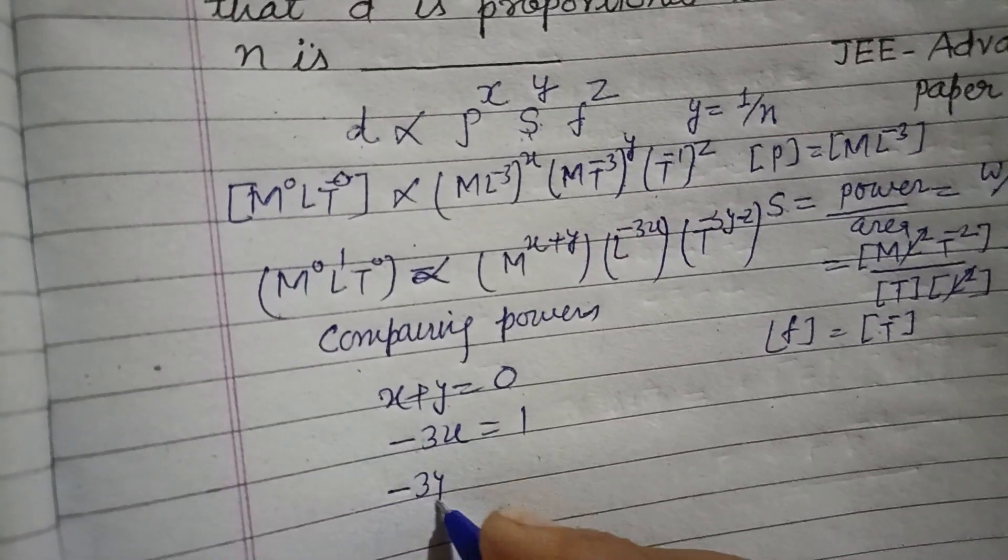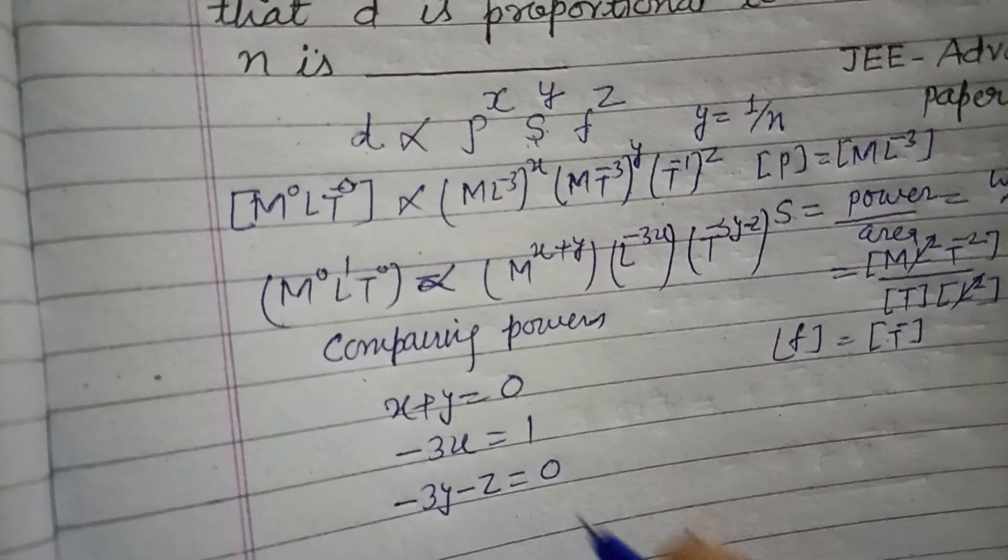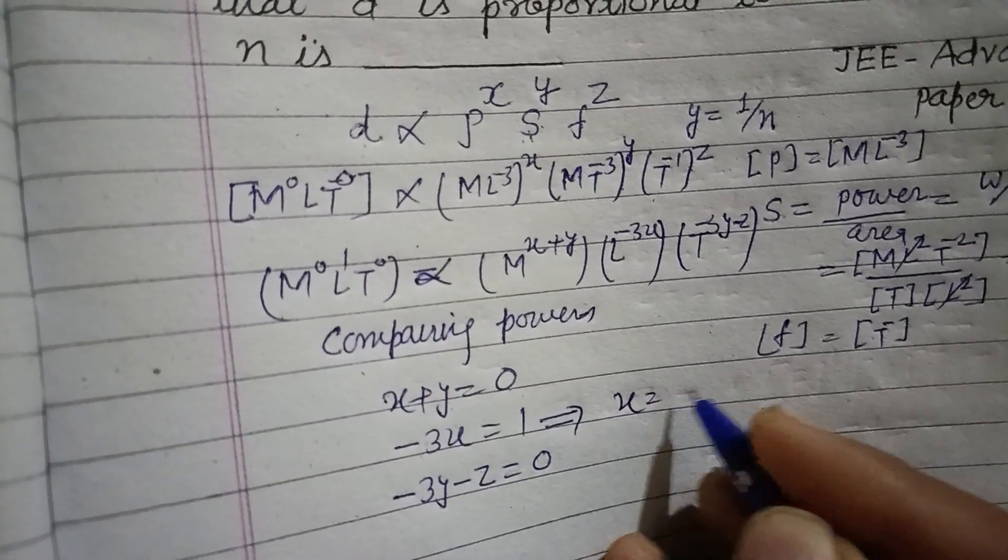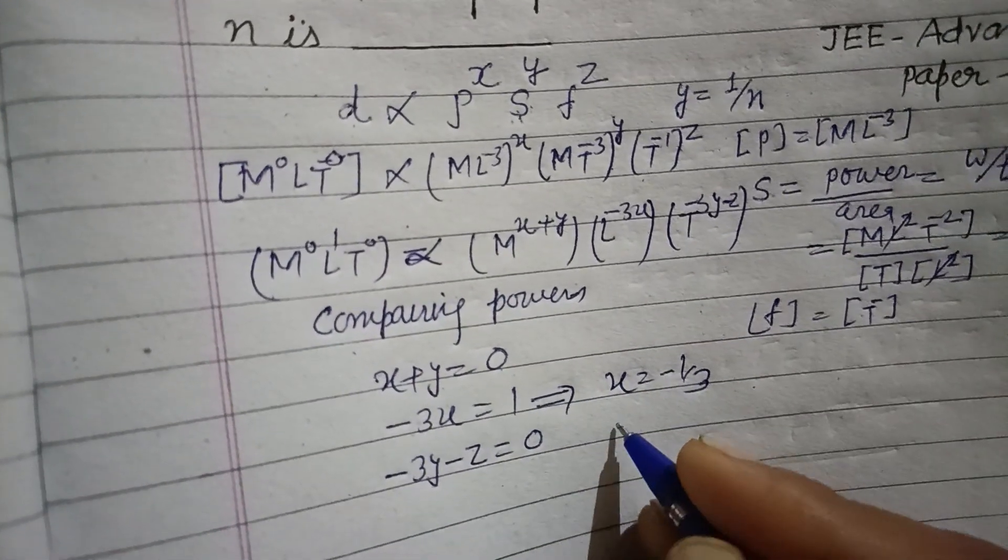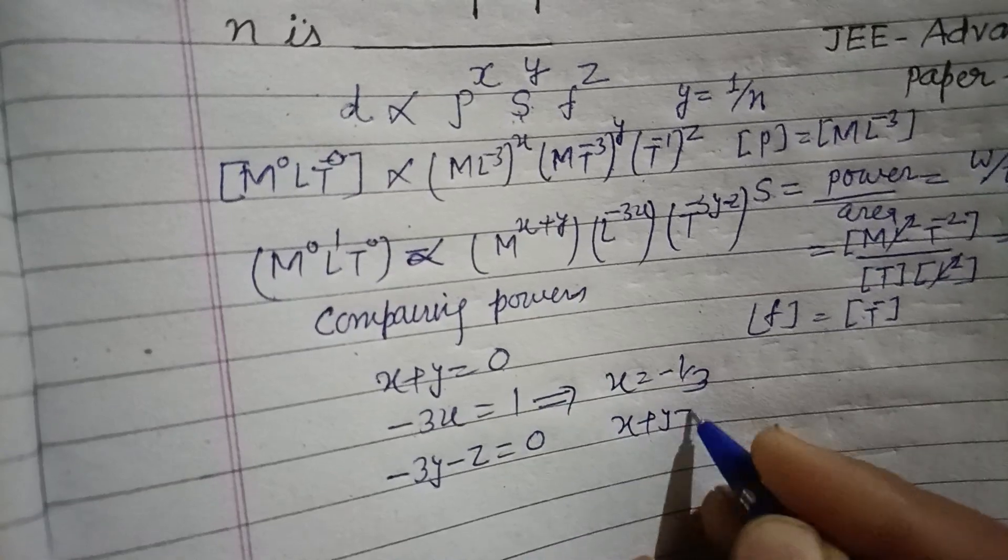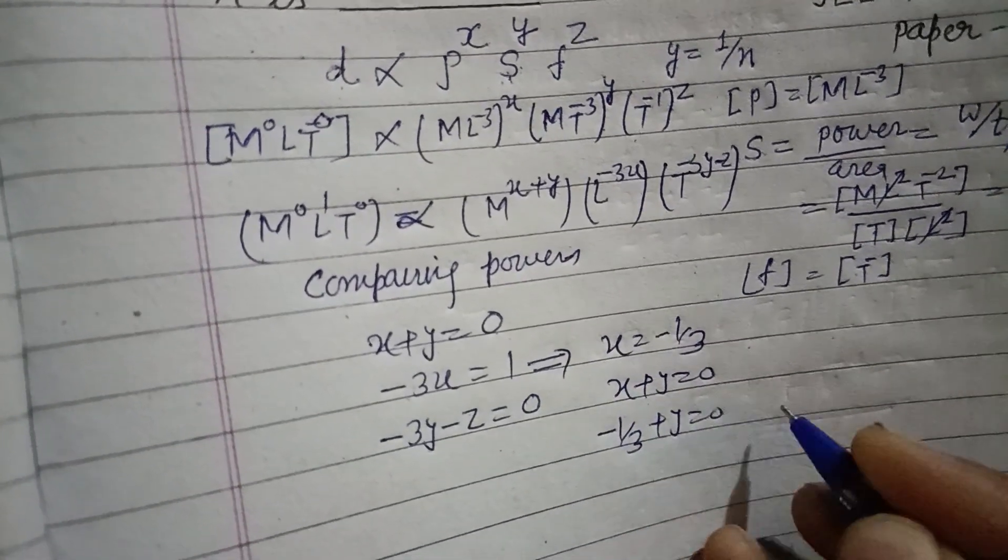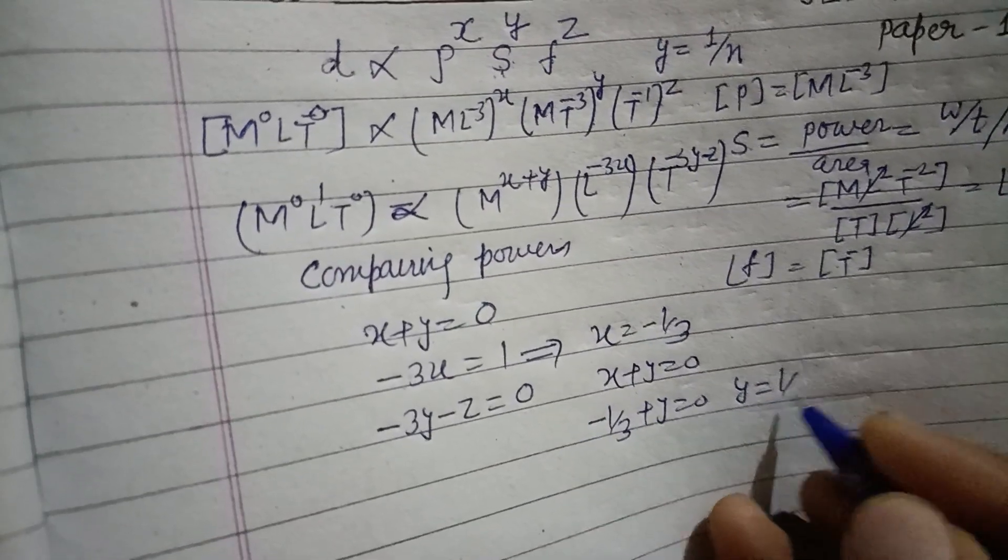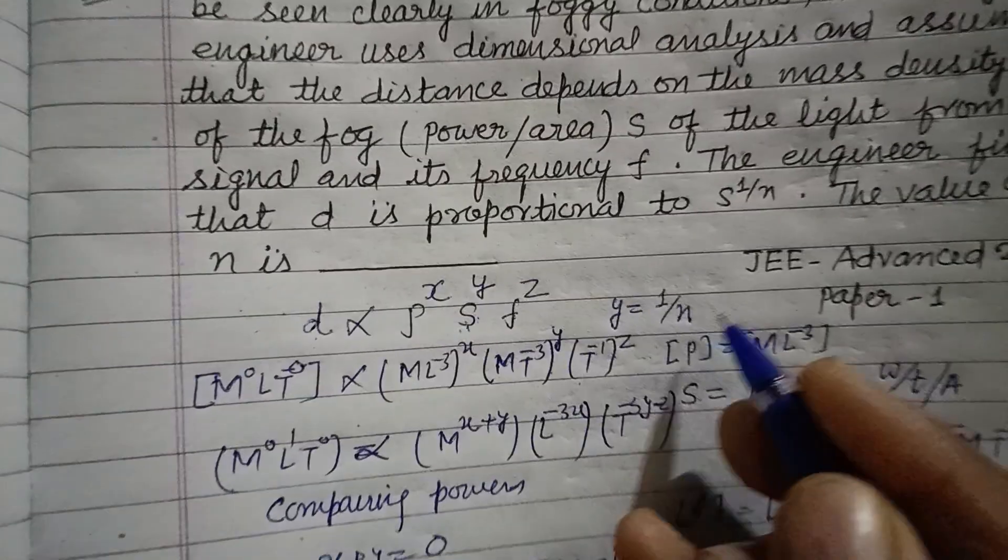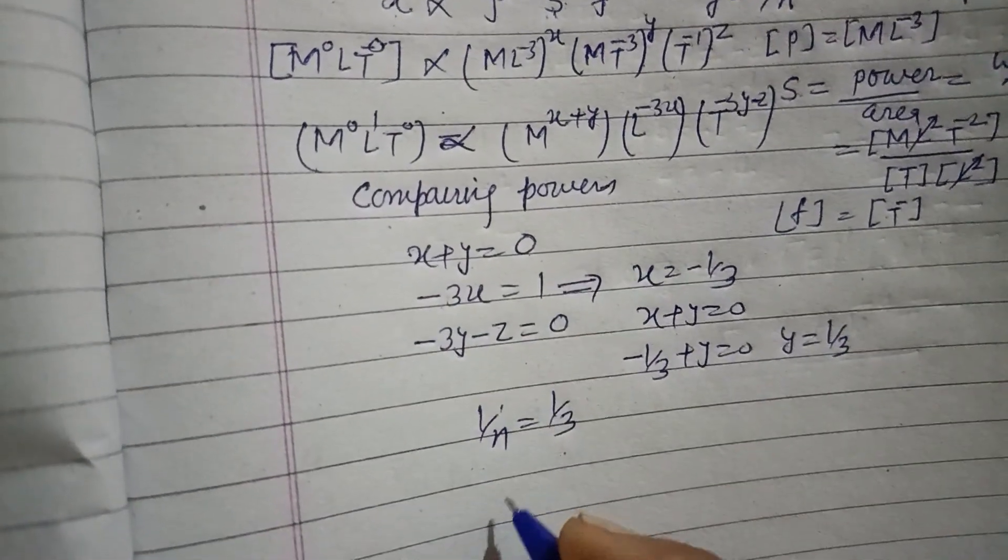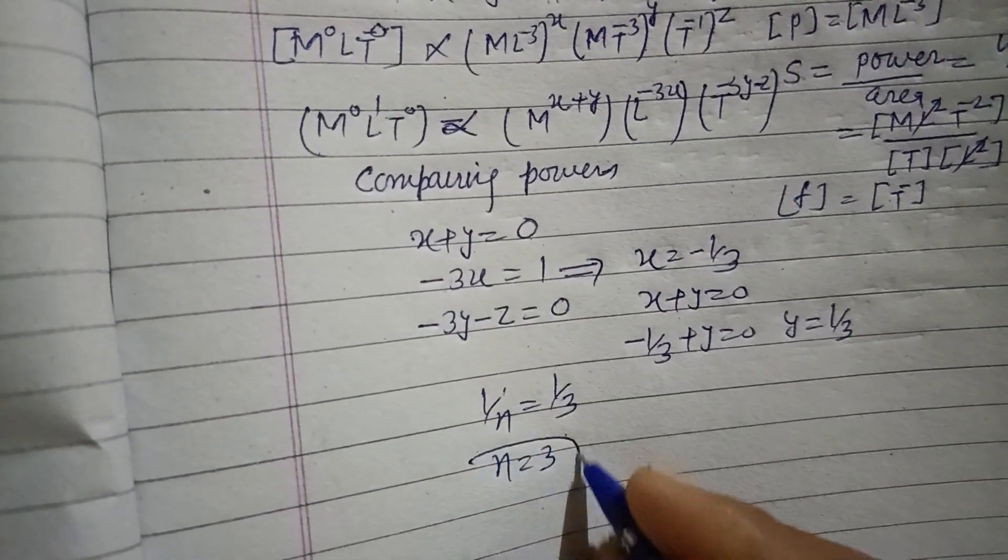And minus 3y minus z equal to 0. So from here we got x equal to minus 1 by 3, and x plus y equal to 0. We put minus 1 by 3 plus y equal to 0, therefore y equal to 1 by 3. And y is given to us from here, 1 upon n. So 1 upon n equal to 1 upon 3, that is n equal to 3. So n is equal to 3.